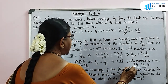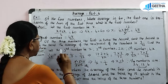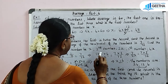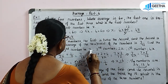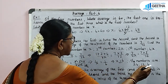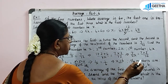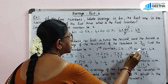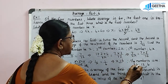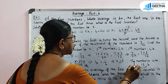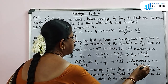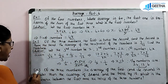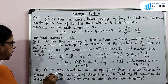Substituting x equals 6: the third number is x, that is 6; the second number is 2x, that is 12; the first number is 4x, that is 4 into 6 equals 24. So the numbers are 24, 12, and 6.